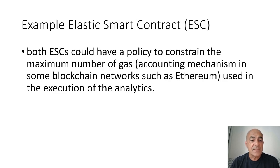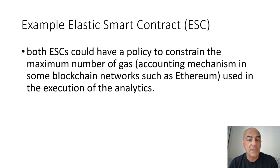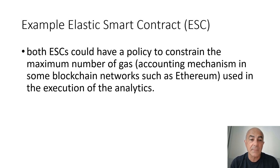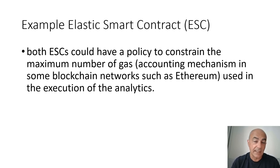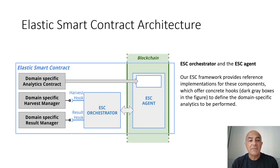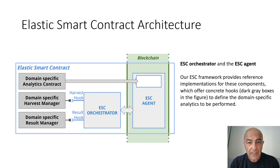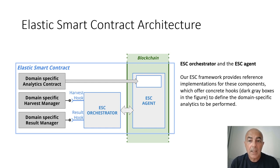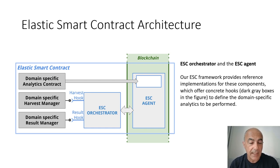In this Elastic Smart Contract example, both Elastic Smart Contracts could have a policy to constrain the maximum number of gas. Gas is the accounting mechanism in some blockchain networks such as Ethereum, used in the execution of such analytics. We have developed an Elastic Smart Contract architecture, which we highlight in this paper. It comprises an Elastic Smart Contract orchestrator and the Elastic Smart Contract agent as depicted in the figure.